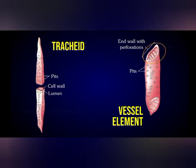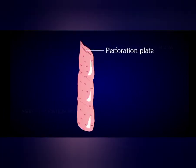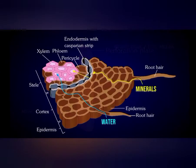Coming to the next part, which is vessels. Xylem vessels are generally a little wider when compared to tracheids. Vessels are short tube-like structures. A xylem vessel is formed when such short tubes are arranged in a line and they together form a long tube-like structure. This long tube made up of small vessels is called a xylem vessel. The small vessels are joined in series to form a long tube.